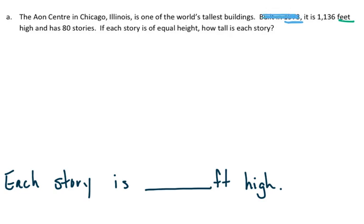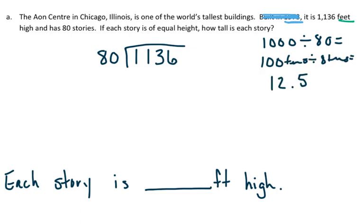So what I do need is the 1,136 feet, and I have to divide that by 80 because it's how many stories. I could do my estimate: 1,000 divided by 80. That information I'm going to use to solve my problem.